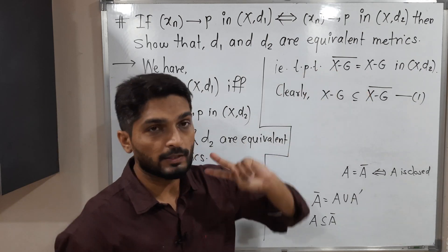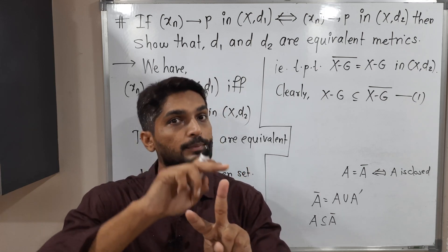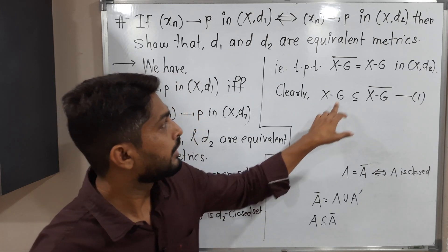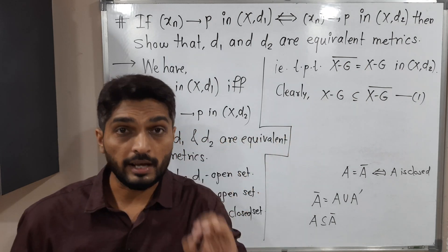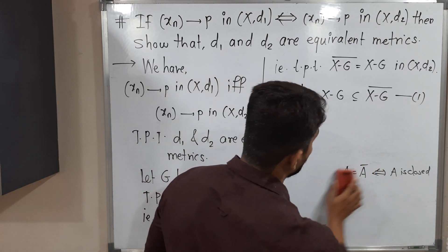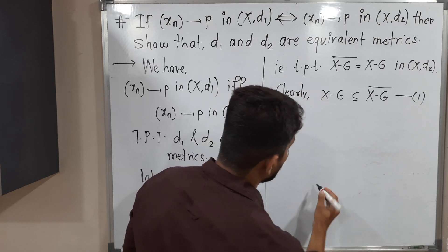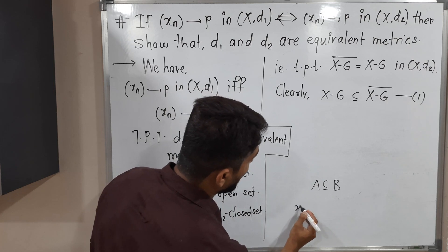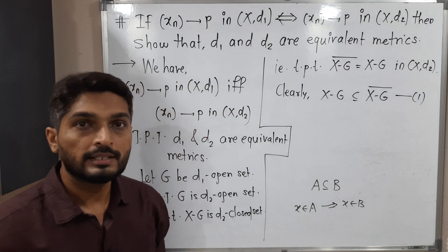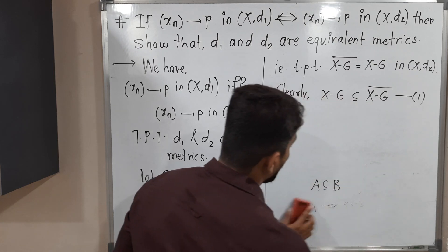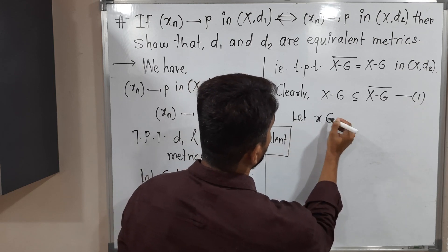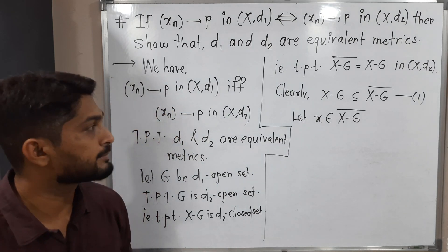To prove X minus G bar is a subset of X minus G, we take one point from the first set and prove it belongs to the second. Let x belong to X minus G bar. I have taken a point from the closure of X minus G.